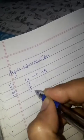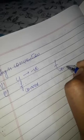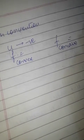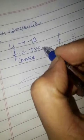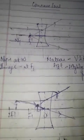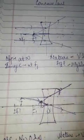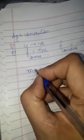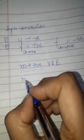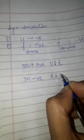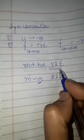In sign conventions: u (object distance) will always be taken as negative. For focal length — the focal length of a convex lens is positive, because it converges rays on the right side. The focal length of a concave lens is negative, because parallel rays converge on the back side. If m is positive, the image is virtual and erect. If m is negative, then it is real and inverted — we did all of this in the mirror formula also.